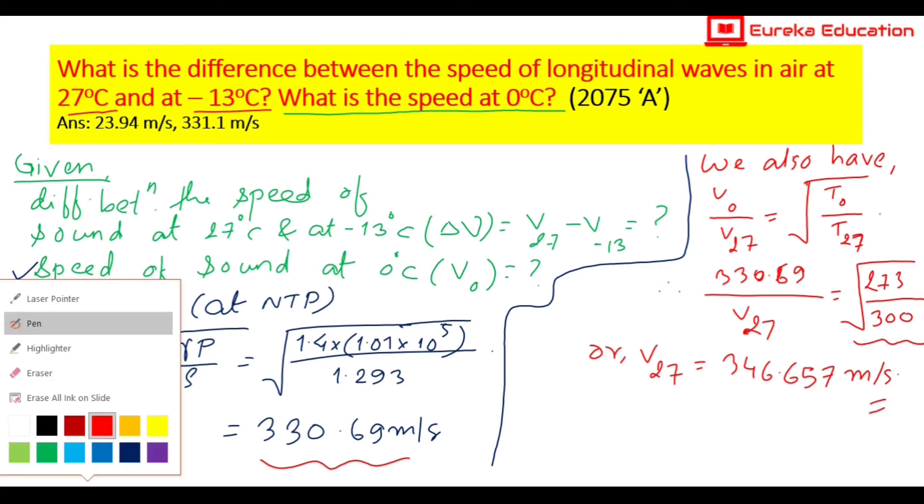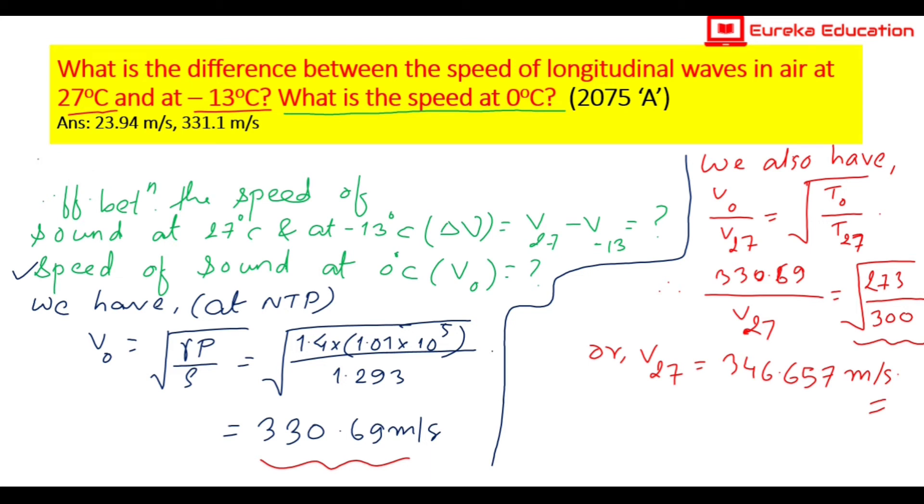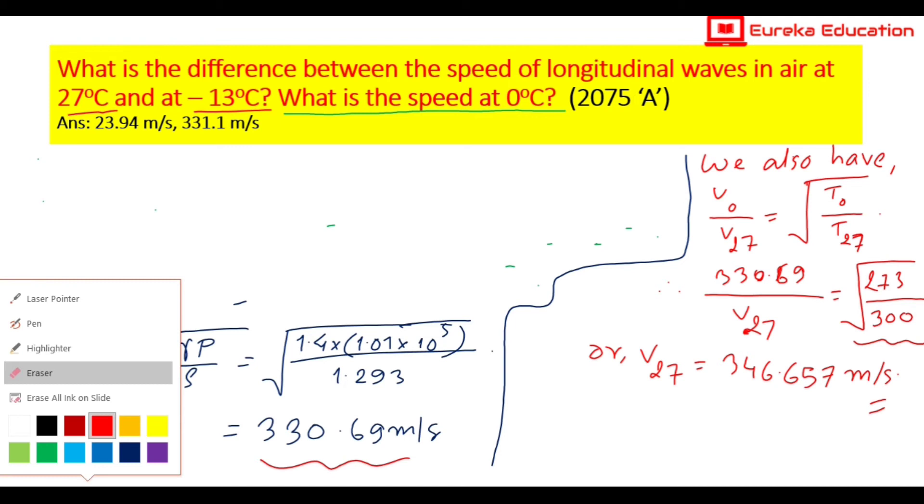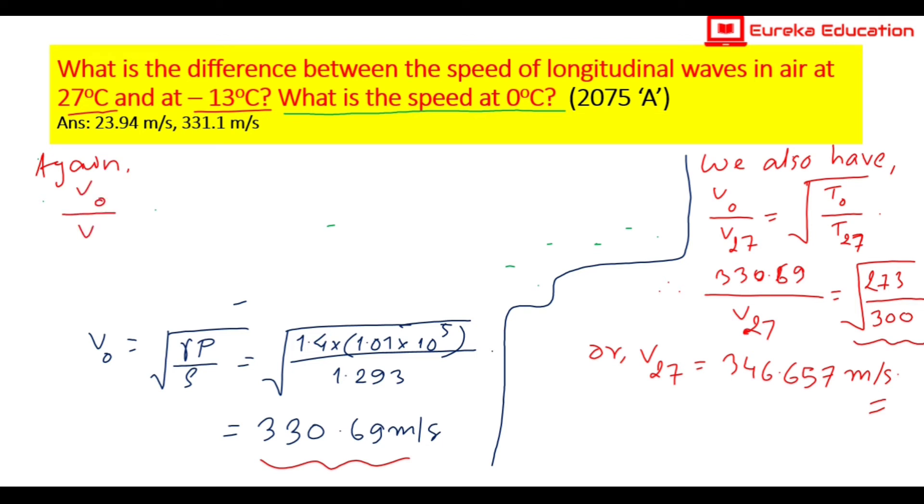The value of v27 is calculated. Now we need to find v-13 as well. We use the same formula: v0 by v minus 13 equals root under t0 by t minus 13. Substituting values, v0 is 330.69 divided by v minus 13 equals root under 273 divided by 260 (since minus 13 C in Kelvin is 260).